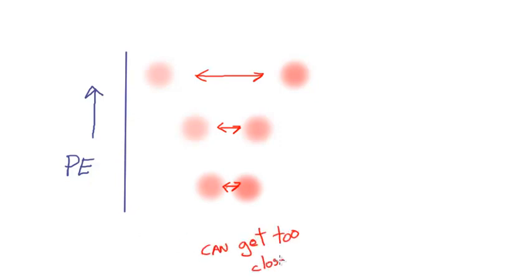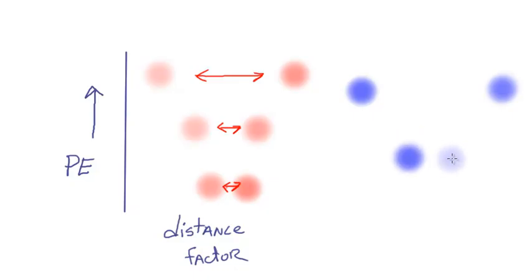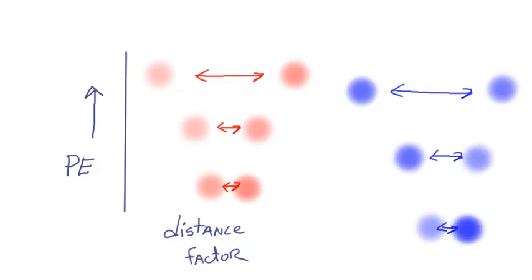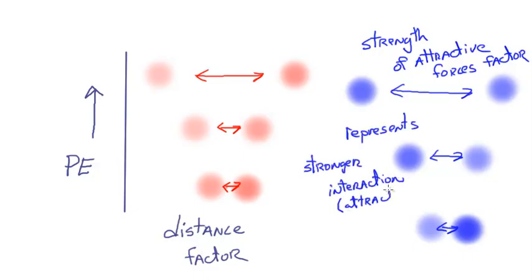Now these particles can actually get too close, and if that occurs, the potential energy can shoot back up, which implies a repulsive interaction is occurring. For the sake of this video, I want to focus on the attractive forces. Potential energy is not just a function of the distance between particles, but also the strength of the interaction or attractive forces between them. So if I'm comparing two systems, one where the attractive forces are stronger — represented by the blue particles here — I can see that the potential energy is lower at the same average distance if the attractive forces are stronger.